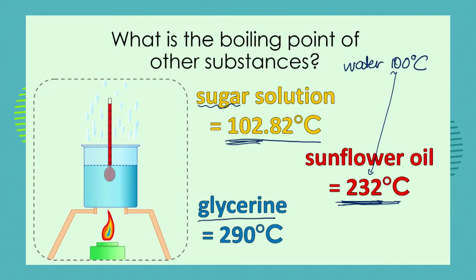Glycerine is a substance often used in hand creams and hand lotions. Its boiling point is nearly three times the boiling point of water.